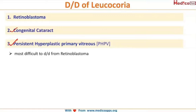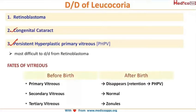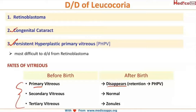Let's understand what persistent hyperplastic primary vitreous is. The vitreous forms in three stages in the fetus. The primary vitreous is vascular and normally disappears completely after birth, as we need clear visual access. If it persists, that condition is known as persistent hyperplastic primary vitreous (PHPV), and it results in leukochoria or a white fundal reflex.